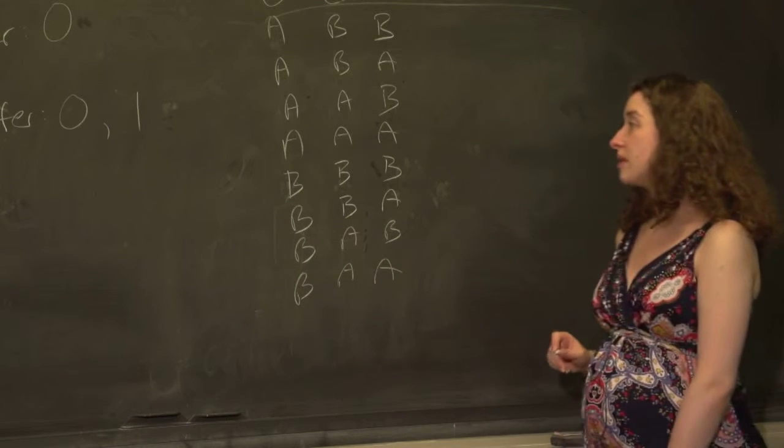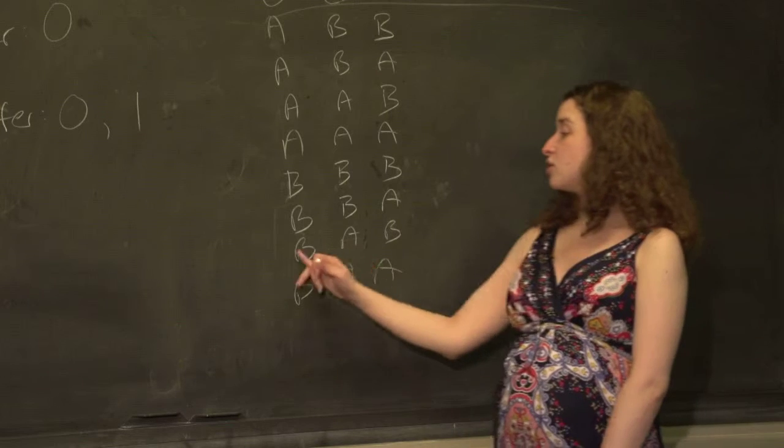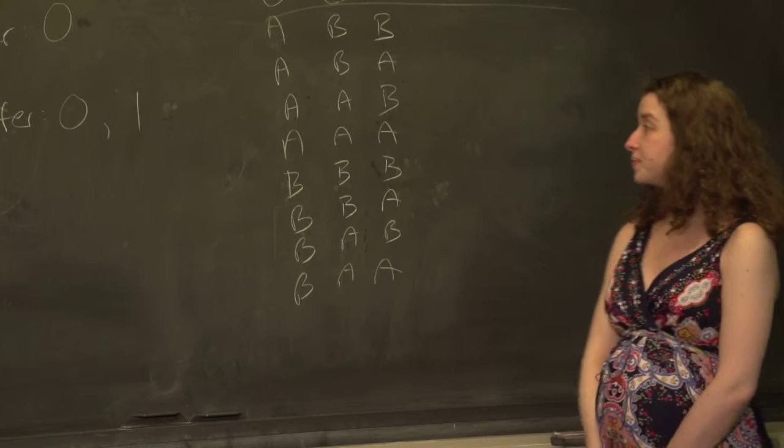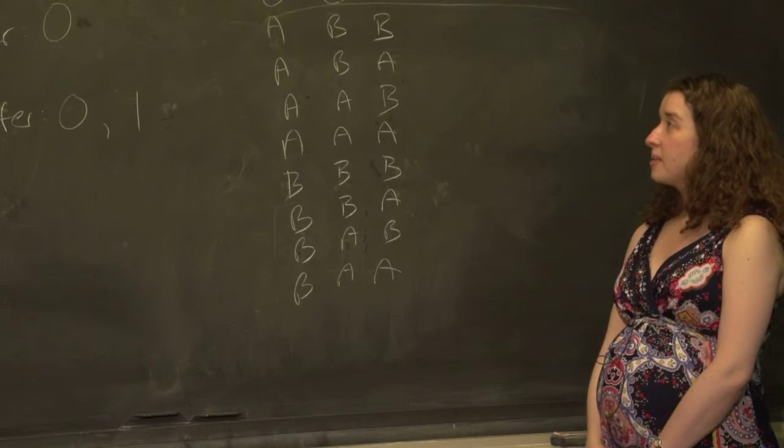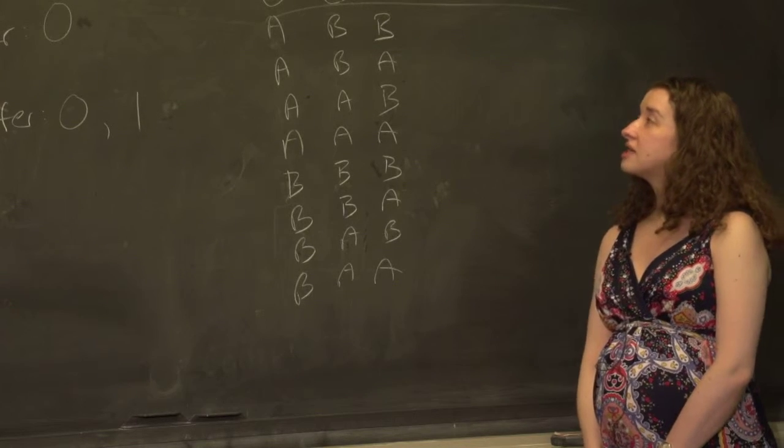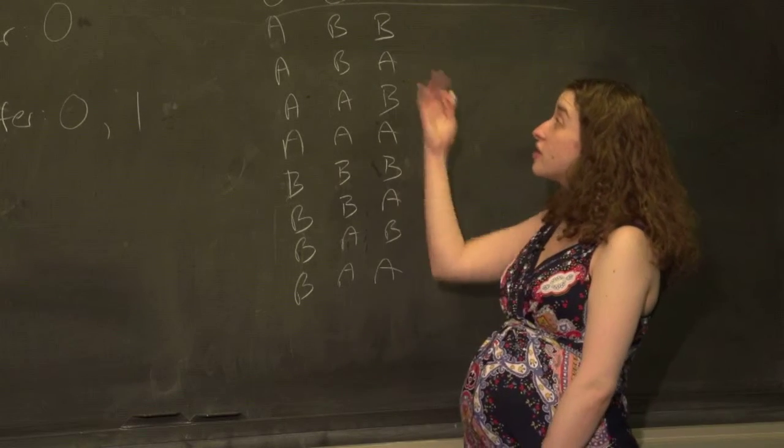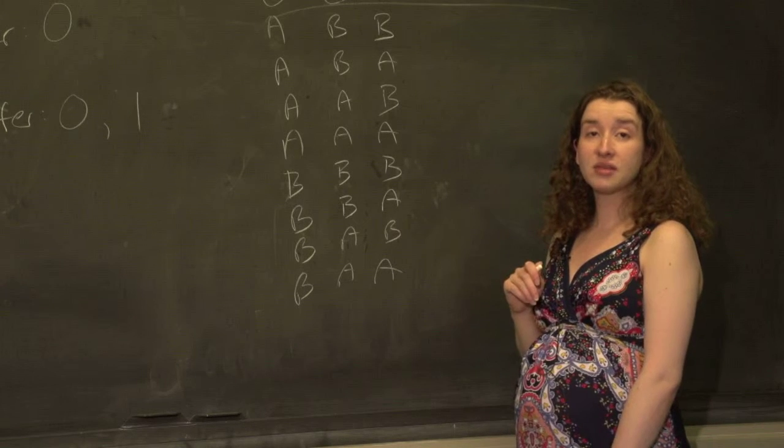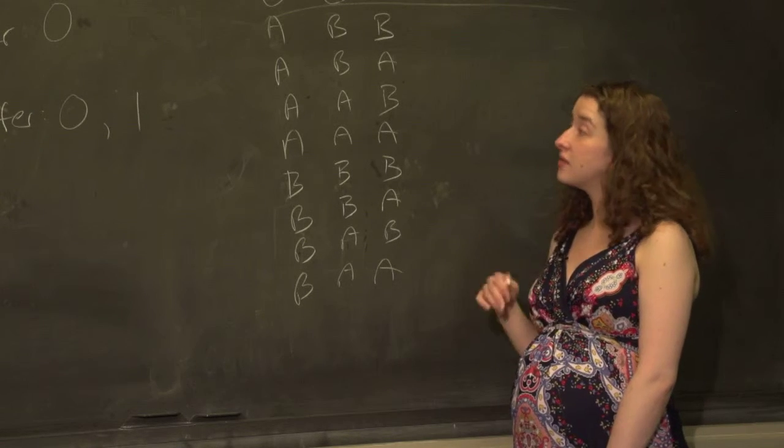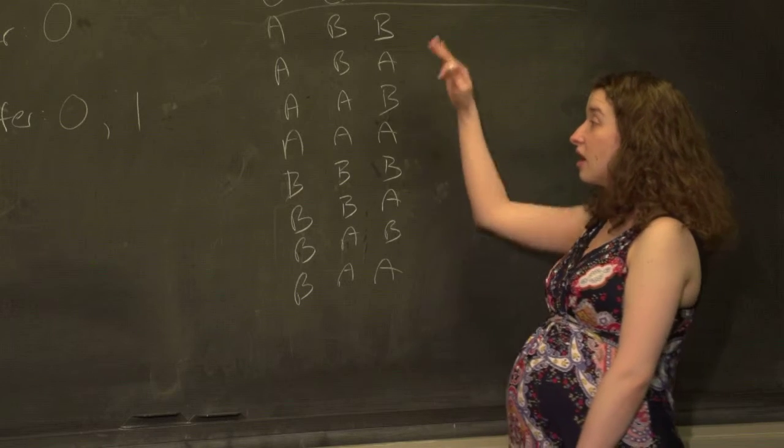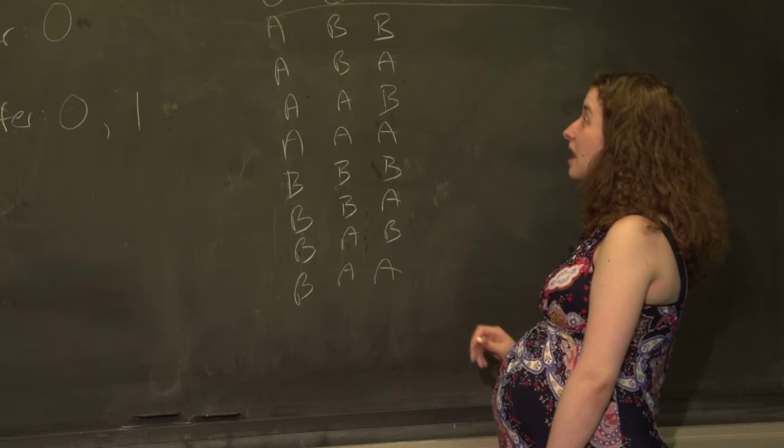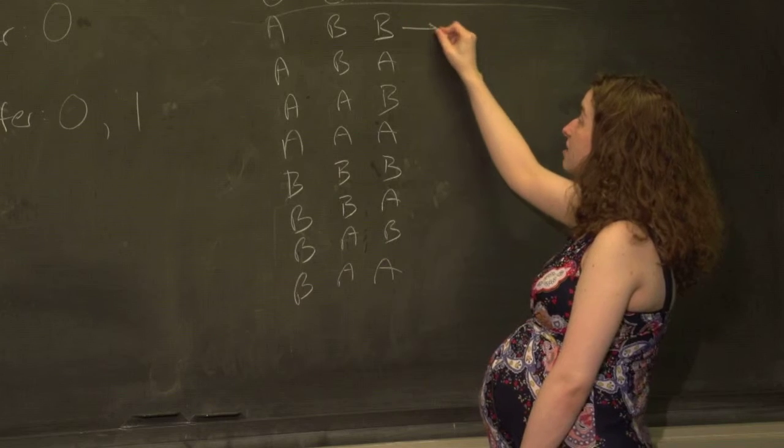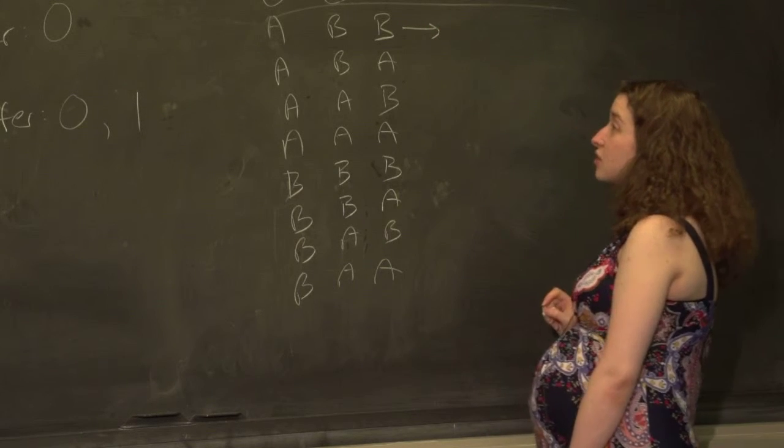There's two to the three possibilities, which is eight here, because there's two choices for each of three people. So we can go through the same process of saying assume which group you're in has nothing to do with whether you won or not. Let's compare the difference in means that we actually observed to the difference in means that we would have observed under each of these different equally likely ways to allocate some people to group A and some people to group B.